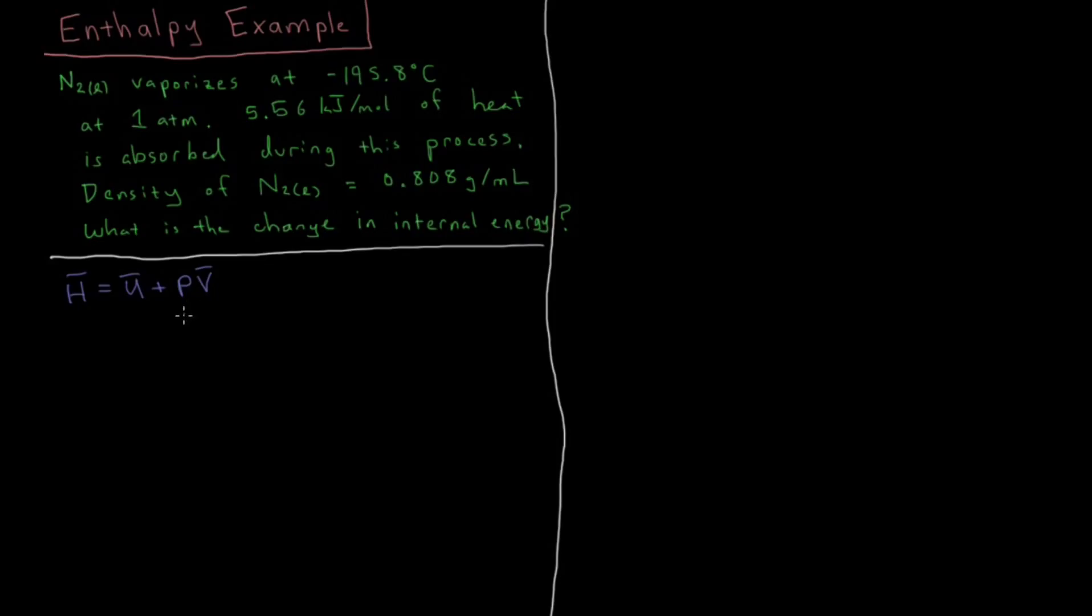During some process, the change in enthalpy is going to be given by delta H equals delta U plus P delta V bar plus V bar delta P. But remember, if it's just open to the atmosphere at a pressure of one atmosphere, then that is going to be constant pressure during that process. So this term goes to zero. So our delta H, as it is for constant pressure processes, is just delta U plus P delta V.